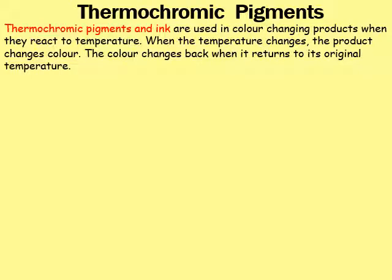The first type of smart material I'd like to discuss is thermochromic pigments. It's important that you take note of the 'thermo' part of thermochromic, because that implies it's to do with temperature. Thermochromic pigments and ink are used in colour-changing products when they react to temperature — when the temperature changes, the product changes colour, and the colour changes back when it returns to its original temperature. That is the official definition of a thermochromic pigment.